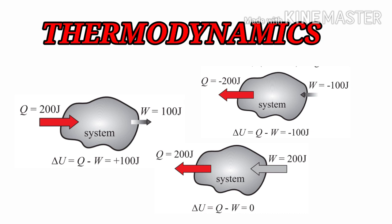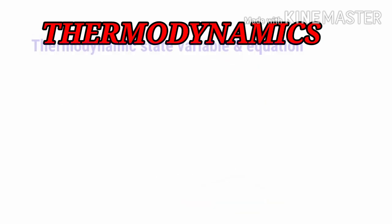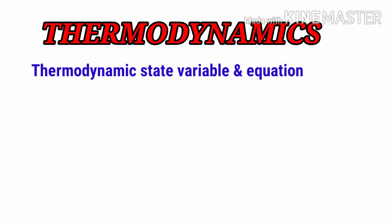These are the things we discussed in the previous lecture. Now we move ahead to the next part of the chapter: thermodynamic state variables and the equation of state. The equilibrium state of a body is completely described by the values of macroscopic variables — for example, the pressure, temperature, volume, and mass.